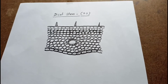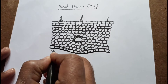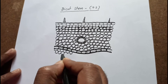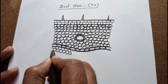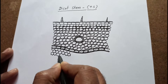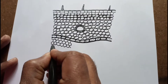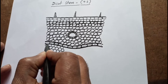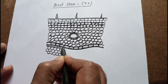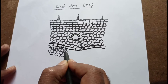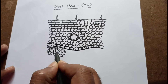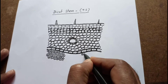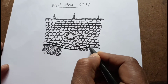Below the endodermis there is a pericycle, which is present in patch-like structures above the vascular bundles. Generally pericycle is made up of sclerenchyma. You have to make it with a double line to represent the sclerenchyma. This pericycle is made up of sclerenchyma, and it is present as patches above the vascular bundles.